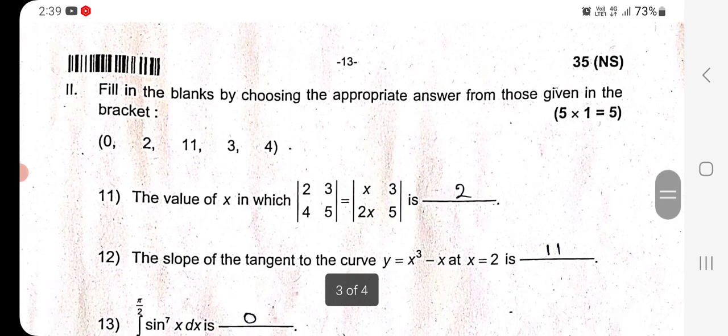Question 11: The value of X in which determinant of 2, 3, 4, 5 equals determinant of X, 3, 2X, 5 is calculated as: 2 times 5 equals 10 minus 12 equals 5X minus 6X. Therefore, minus 2 equals minus X, minus minus get cancelled, X equals 2. So the first answer is 2.